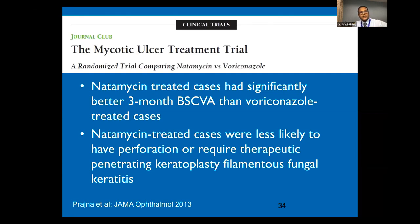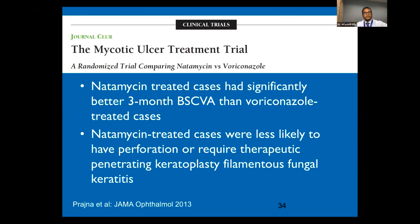A landmark level-1 evidence trial, the Mycotic Ulcer Treatment Trial (MUTT), found that natamycin, a polyene, was actually significantly better than voriconazole in managing filamentous hyaline fungi. Cases treated with natamycin had significantly better three-month best-corrected visual acuity than voriconazole, and were less likely to have perforation or require therapeutic penetrating keratoplasty.